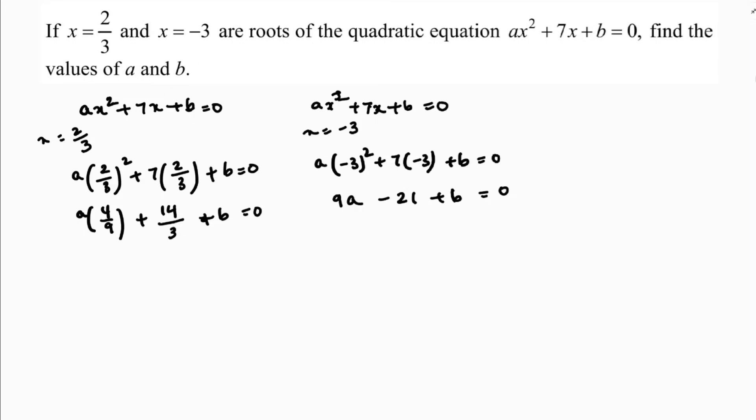This is equation 1 and 2. So, what I will do is, see here both are equal. Here I have b, here also I have b. So, from any one of the equation, from the second equation, what is b? b value is 21, and 9a also if you will take to the other side, minus 9a.